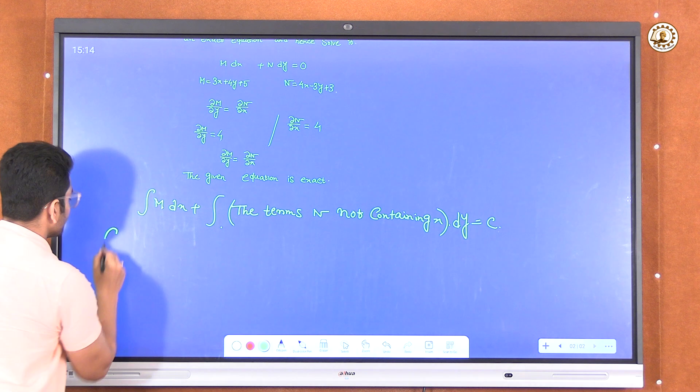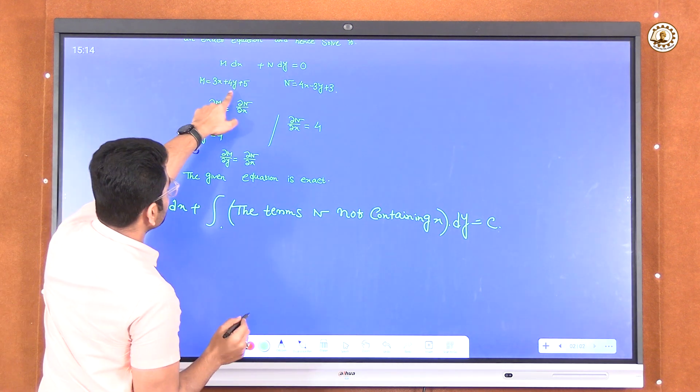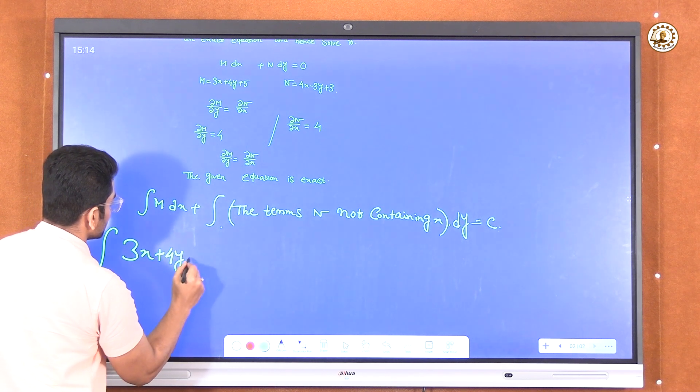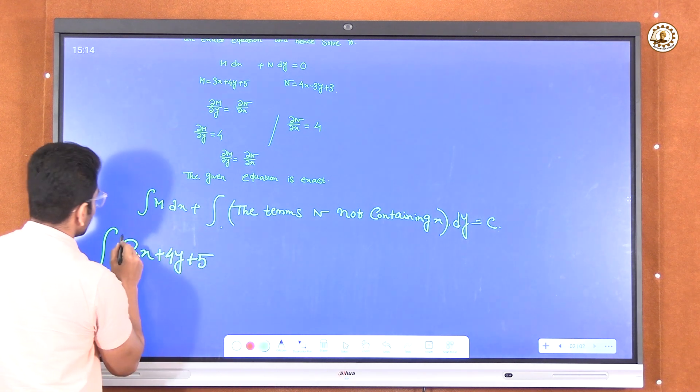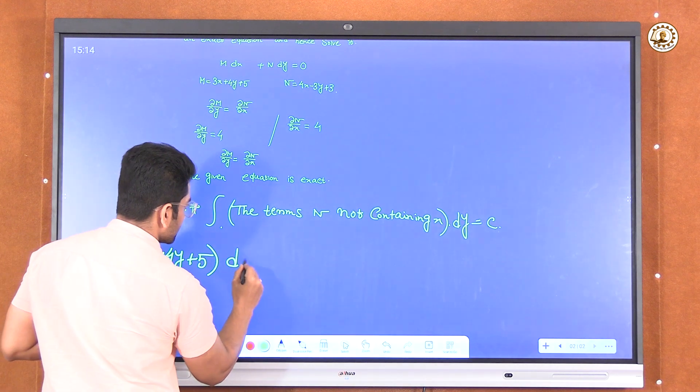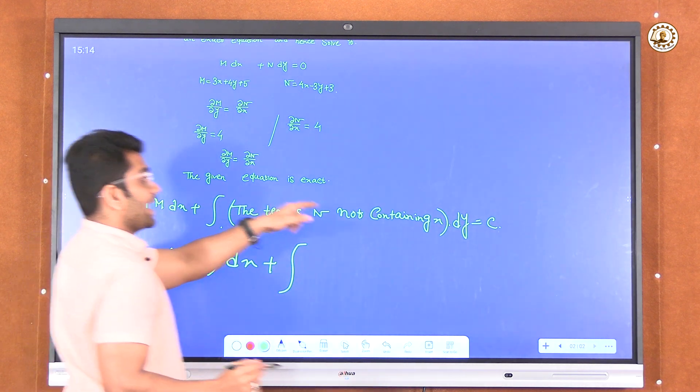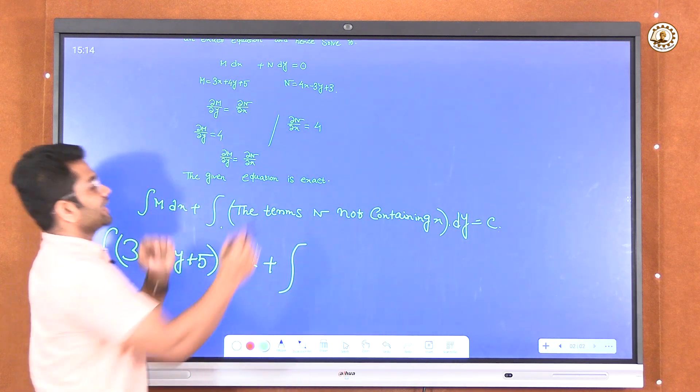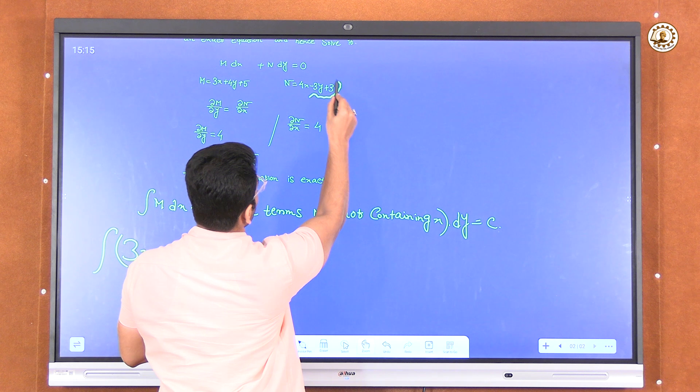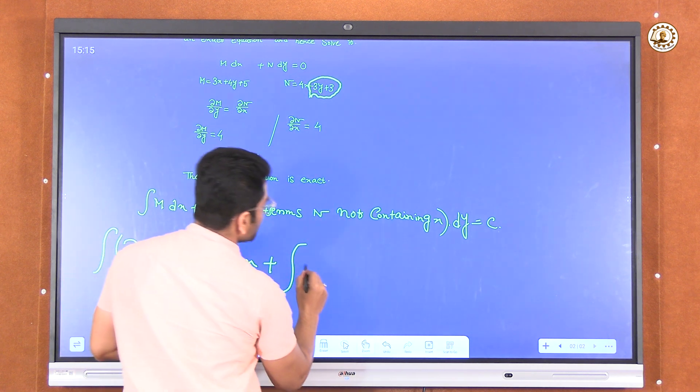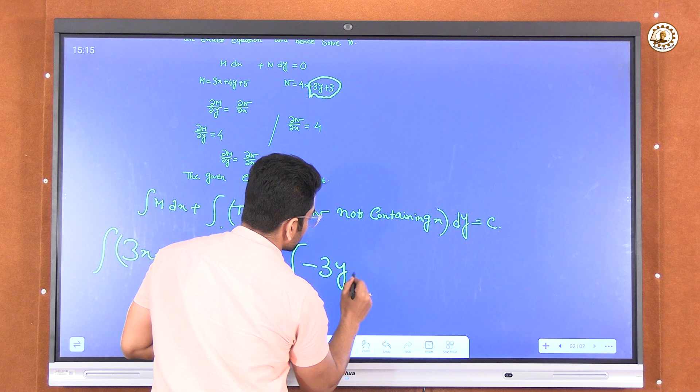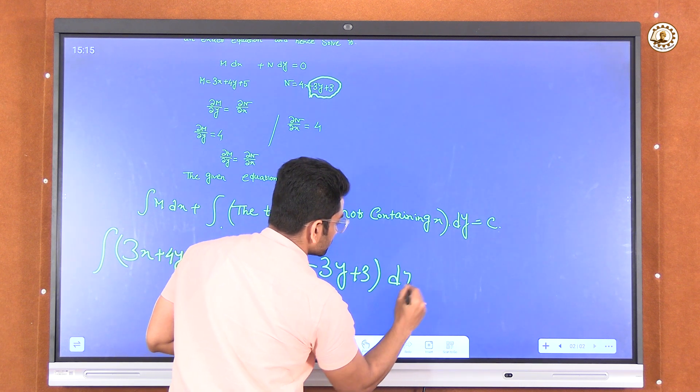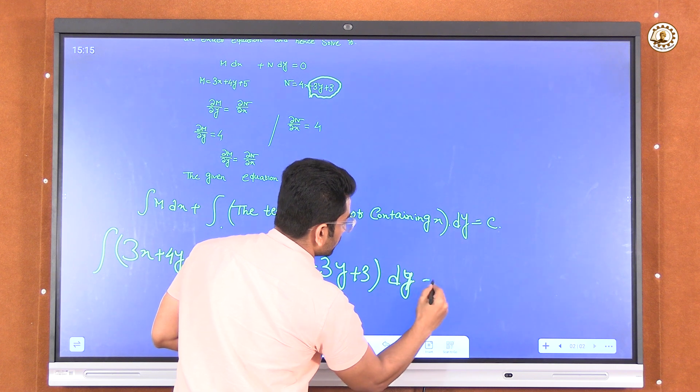Integration of M is 3x plus 4y plus 5, so it will be integration of (3x + 4y + 5) dx, and terms of N not containing x will be -3y plus 3, so integration of (-3y + 3) dy equals c.